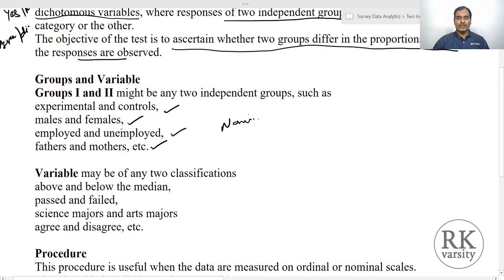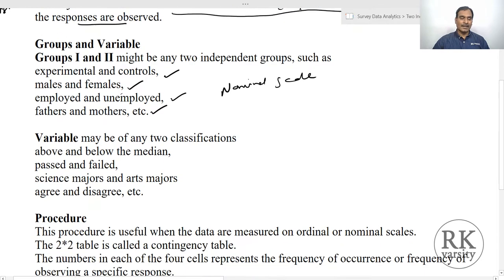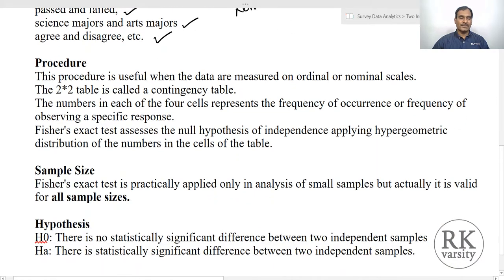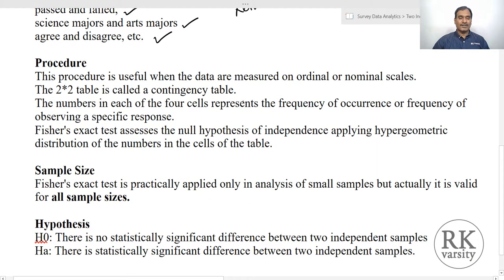These groups are mostly measured on a nominal scale. The variables may have two classifications like below and above a median, pass or fail, science majors or art majors, agree or disagree — these are also measured on a nominal scale. Fisher's exact test can also be measured on an ordinal scale, for example when you are talking about agreement and disagreement as part of an ordinal scale. The table used is a two-by-two matrix called a contingency table.